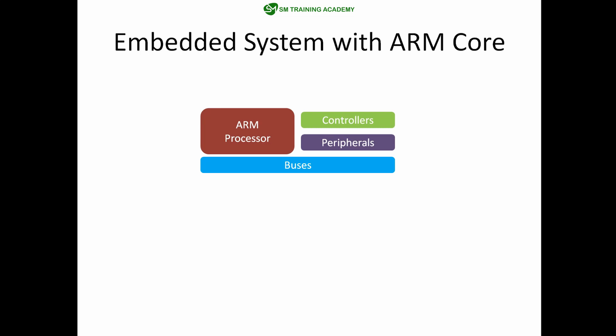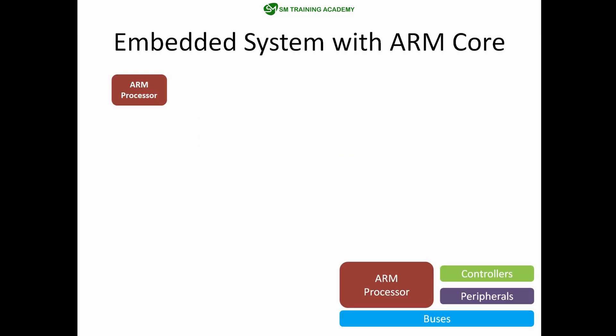The ARM processor is the core element, useful for processing instructions and manipulating data as per the instructions provided. In this basic structure, the ARM processor is further connected to interrupt controllers through buses, and also connected to the AHB arbiter, which is a kind of bus available in this ARM processor.